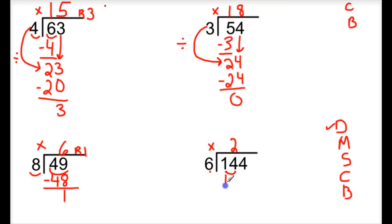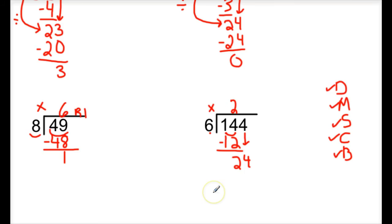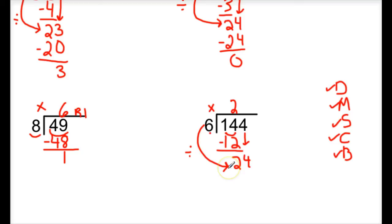Now I need to multiply: 6 times 2 is 12. Then I need to subtract: 14 minus 12 is 2. I need to check — is this 2 less than 6, my divisor? It is less than that. Now I can go to my next step, which is bring down, and I'm going to bring down the 4. Now I need to look at this and decide — do I need to keep going? In this case, if I'm going to have 24, I can keep going because I can take out more groups of 6 out of 24. So it's 24 divided by 6, or how many groups of 6 can I get out of 24 without going over?